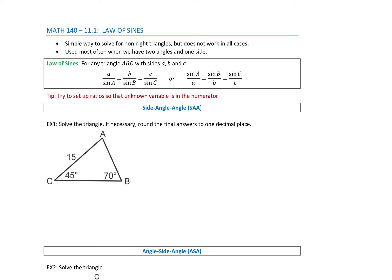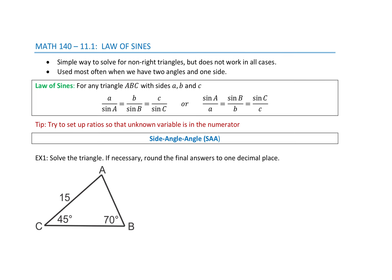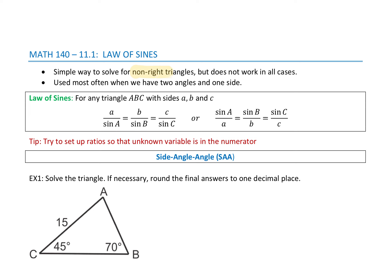In 11.1, we're going to introduce the Law of Sines, which is based on the idea of similar triangles where you compare the ratio of angles and sides. The Law of Sines will work for any triangle, including right triangles, but if you have a right triangle it's easiest to use what we had before. However, it does not work in all cases — we'll look at the cases where you can use Law of Sines here, and the cases where you cannot, we'll cover in the next section with Law of Cosines.